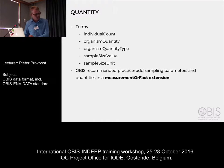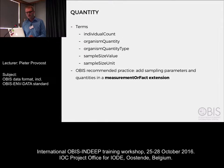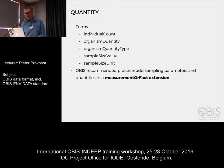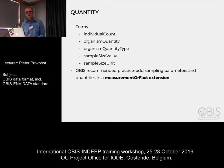Regarding quantity: there is one term, individual count, that has been used a long time for quantities in Darwin Core. There are also four newer terms: organism quantity and quantity type, and sample size value and unit. Within OBIS we recommend putting all your measurements — including biomass or abundance — into the measurement or fact extension.